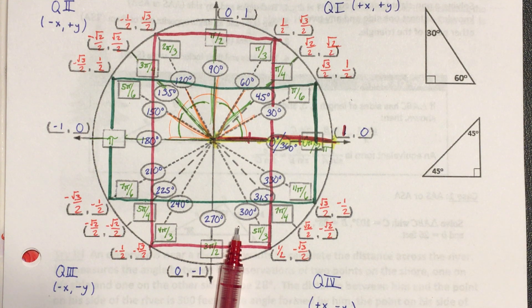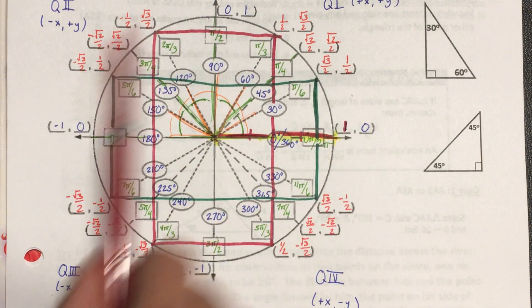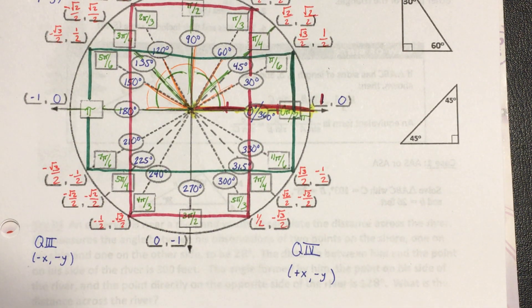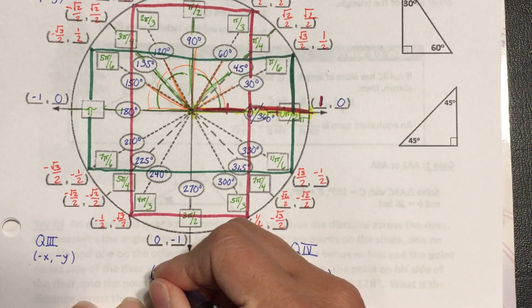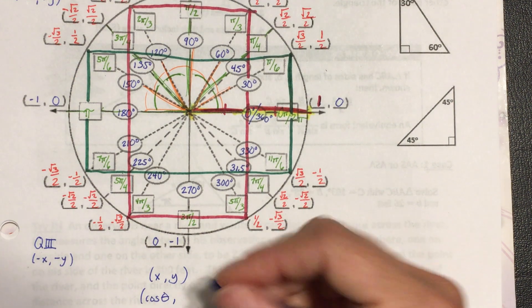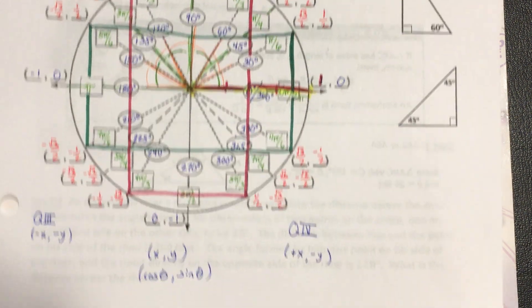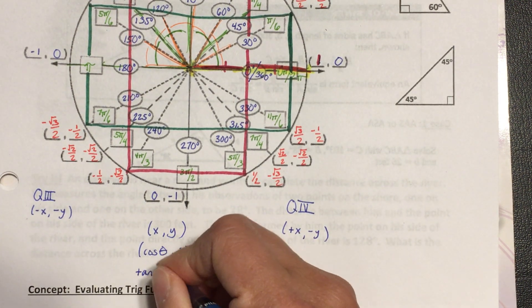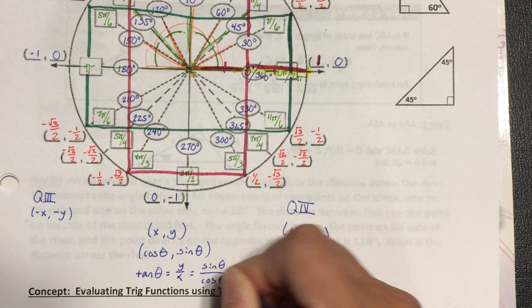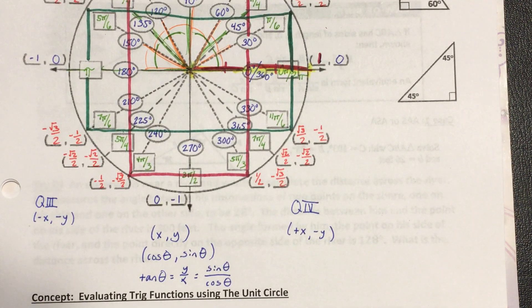On a test you would generate the entire unit circle from a blank and use it for calculations. A few key things to memorize: the x-coordinate corresponds to cosine of the angle, and the y-coordinate corresponds to sine of the angle. Also, tangent θ = y/x = sin θ / cos θ. These relationships will be essential when we start evaluating using the unit circle.